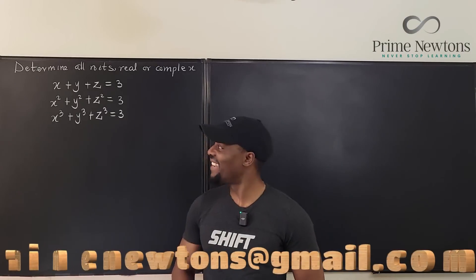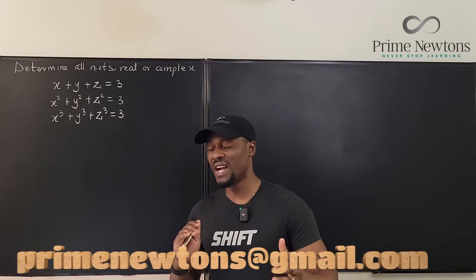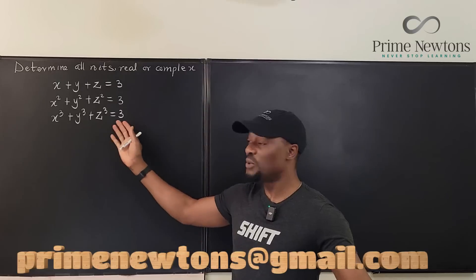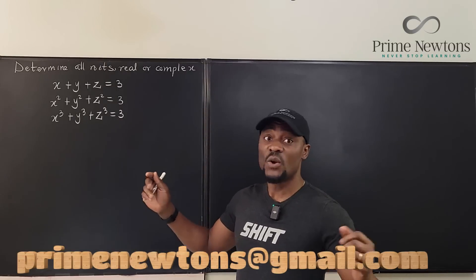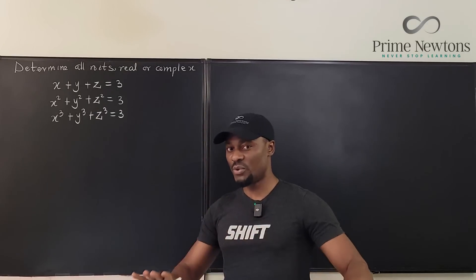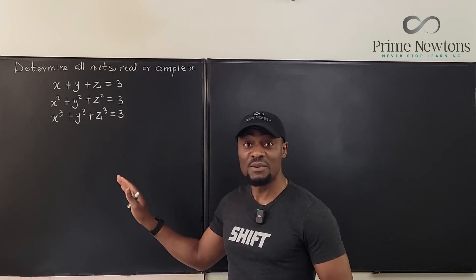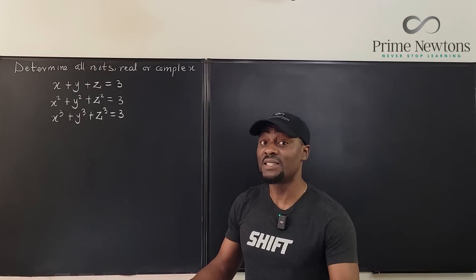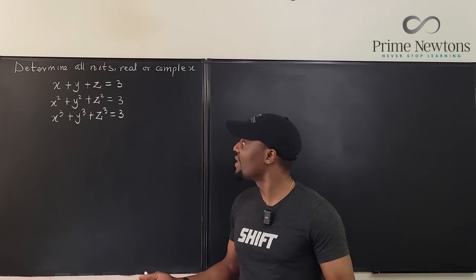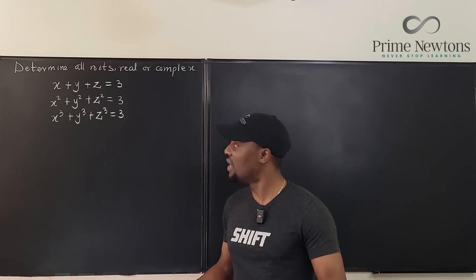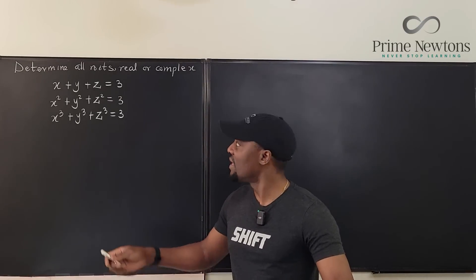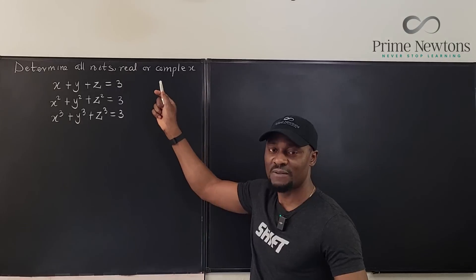Welcome to another video. This is an Olympiad problem from 1973, asking for the solution to a system of equations where all solutions could be real or complex. If you pay attention and try plugging in the easiest numbers, zero wouldn't work, but plugging in one for everything works — x=1, y=1, z=1 satisfies all three equations.